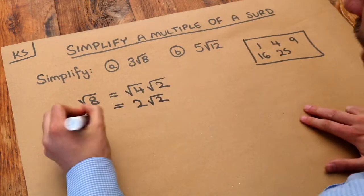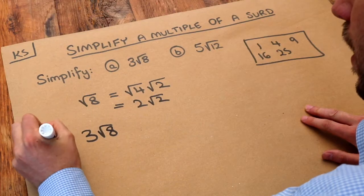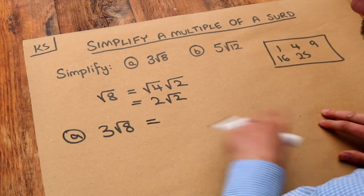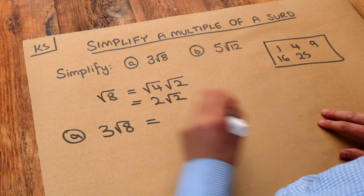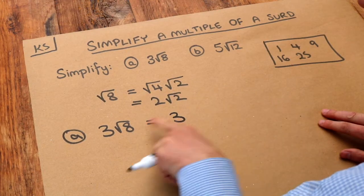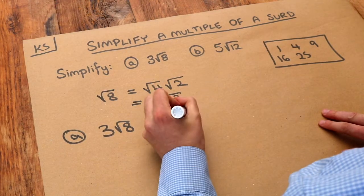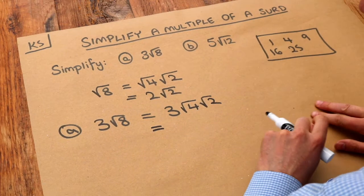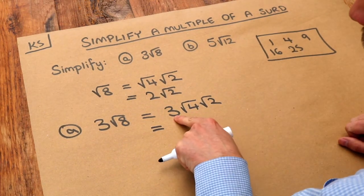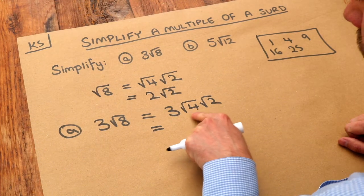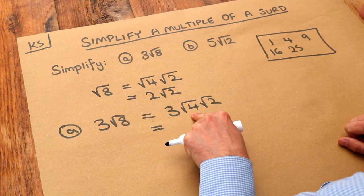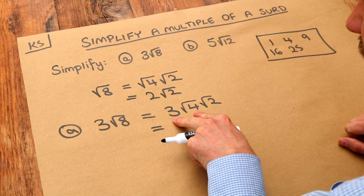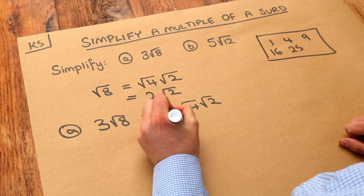Now if we've got three root eight, what we would do is just do exactly the same thing but leave the three on the front. So we'd have the three there and we'd write what we did before. So root four root two. And then in our head we say what's three times the square root of four? Well the square root of four is two, so it's three times two is six. So it's six root two.